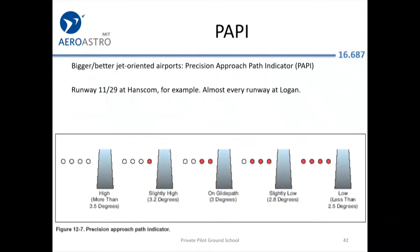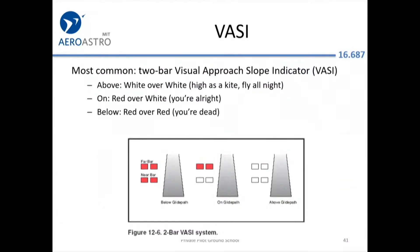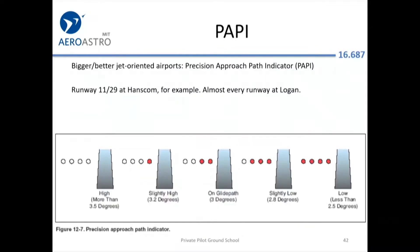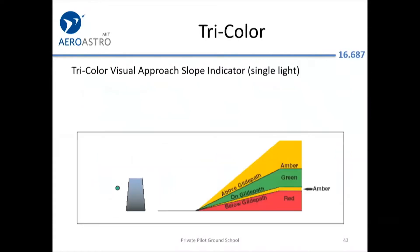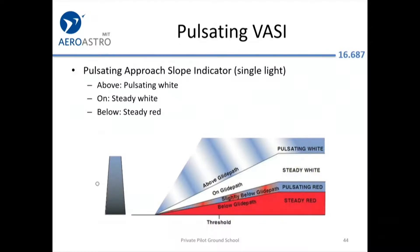Another variation is a PAPI. With VASI, think vertical — some lights on top and some at the bottom. A PAPI is the same thing but horizontal. There also apparently exists a tricolor visual approach slope indicator — almost no one uses this, and you probably will never see it.